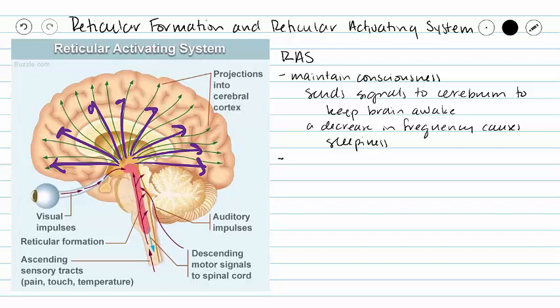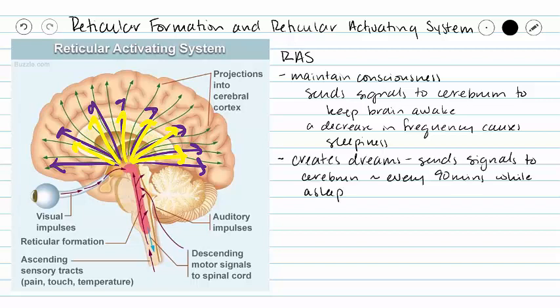Along the same lines, once we fall asleep, about every 90 minutes the reticular formation sends signals to the cerebrum while we are sleeping, and this creates dreams. When we begin to wake up, those signals increase in frequency and that wakes us from sleep. So the RAS is responsible for maintaining consciousness, inducing sleep, creating dreams, and waking us from sleep.